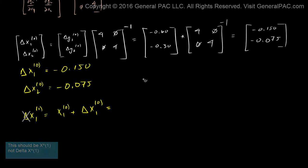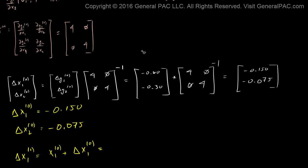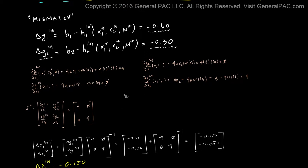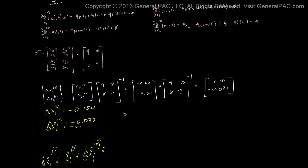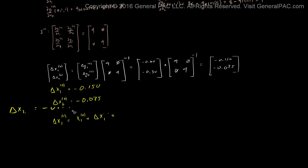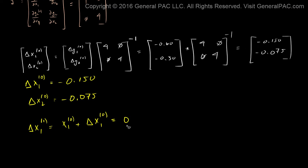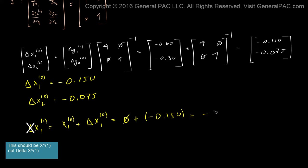That was just simply our initial condition. And our initial condition, if you all remember, was 0. So our initial condition of x1 was just equal to 0. So that is going to equal 0 plus delta x1, which we calculated as negative 0.150, which means the next set of iterations is negative 0.150.